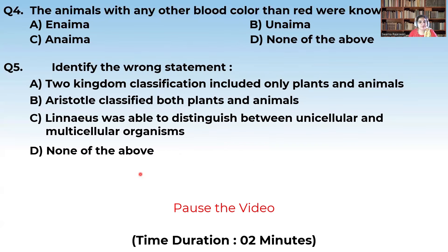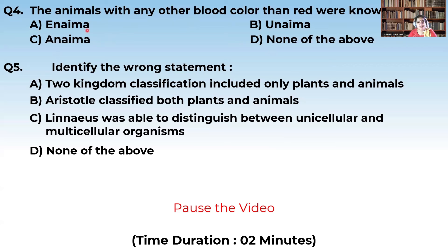Let us see the fourth question. Animals with blood of any color other than red were known as Aneima, Kanaima, Unaima, or none of the above. We have studied this in our previous videos — organisms are divided into two groups based on blood color into Eneima and Aneima. So Aneima is the correct answer.